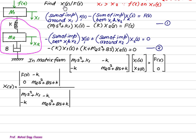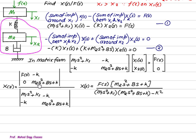To find x1(s)/f(s), since x1 is the first element, we apply Cramer's rule: replace the first column with the solution matrix [f(s); 0], keeping the second column as [−k; m2·s²+b·s+k]. The numerator is f(s)·(m2·s²+b·s+k) − 0. The denominator is the determinant: (m1·s²+k)·(m2·s²+b·s+k) − (−k)·(−k) = (m1·s²+k)·(m2·s²+b·s+k) − k². Therefore, x(s)/f(s) = (m2·s²+b·s+k) / [(m1·s²+k)·(m2·s²+b·s+k) − k²]. This is the required transfer function.